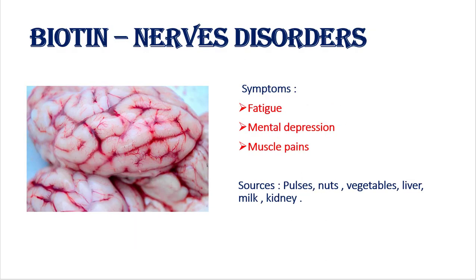The last B-complex vitamin is biotin. The deficiency disease is nervous disorder. Symptoms are fatigue — which may be physical or mental — a person continuously doing work easily gets nervous or fatigued. Mental depression and muscle pains are also symptoms. Sources are pulses, nuts, vegetables, liver, milk, and animal kidneys. These are the very important B-complex vitamins we have covered.